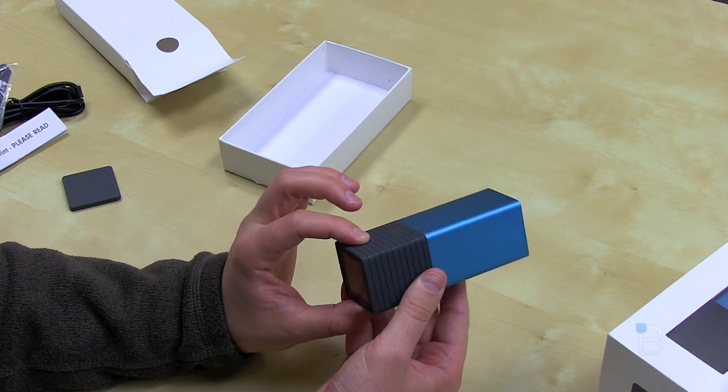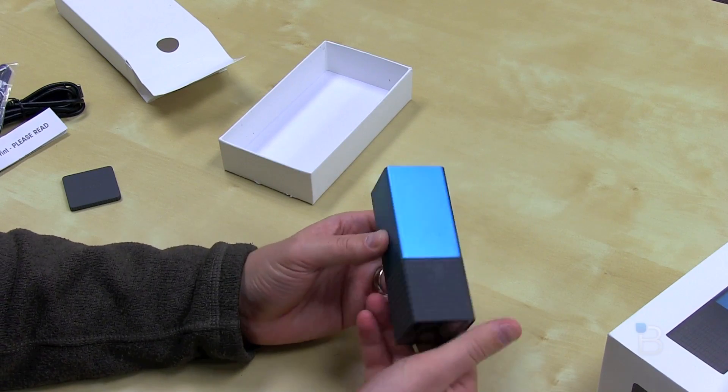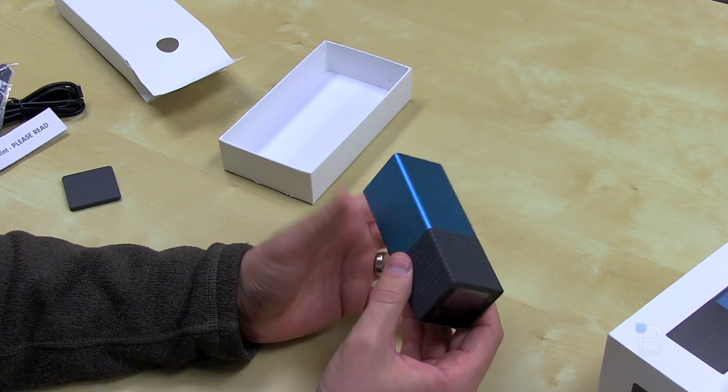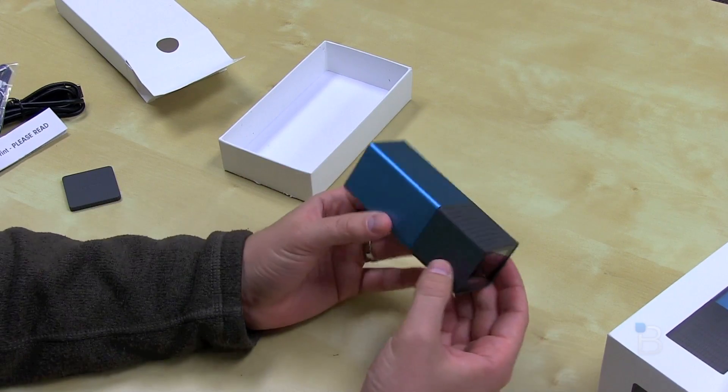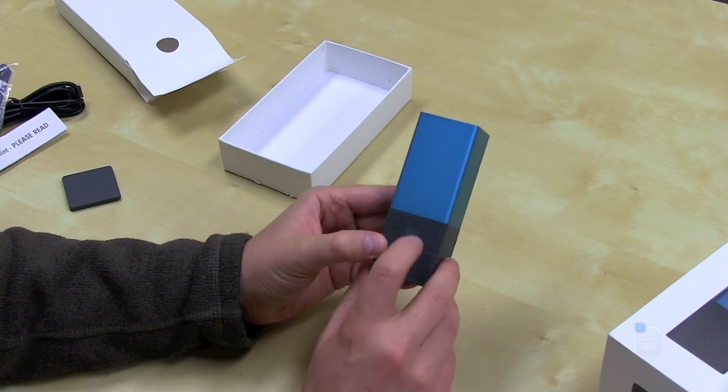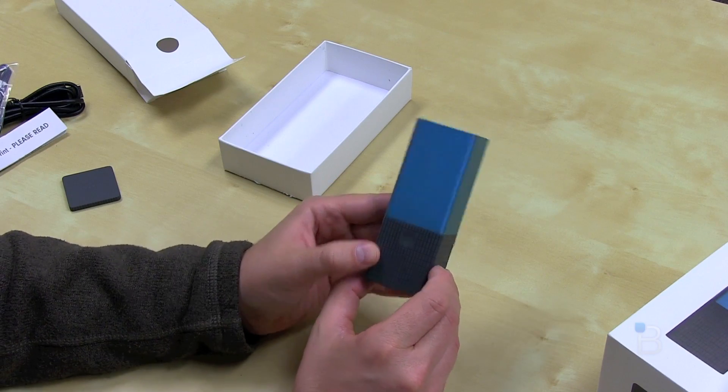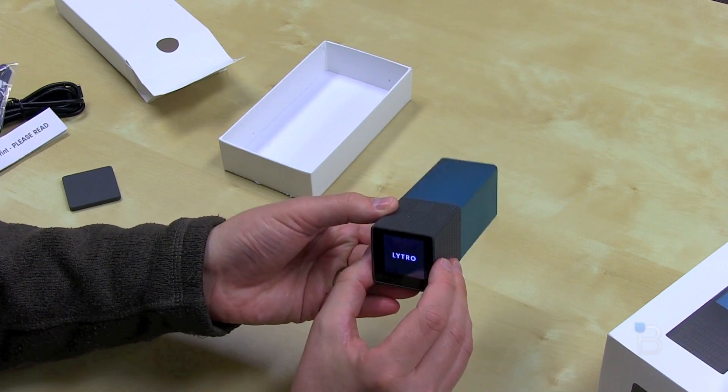Again, it's going to come in 8 or 16 gig configurations and it weighs pretty light at 7.55 ounces. So let's take a look at what we're gonna have on the camera. First, that's the shutter button right there. Go ahead and push it and that's going to take a picture. I believe that also is going to turn it on.